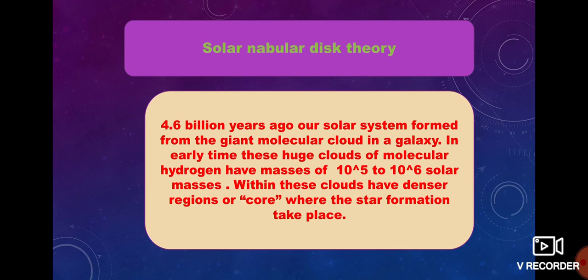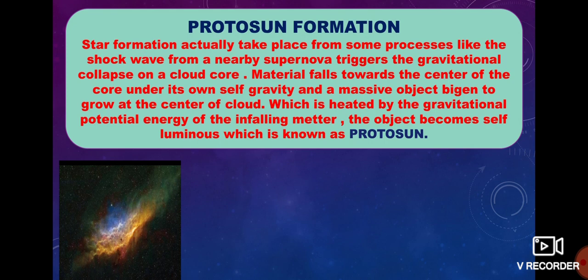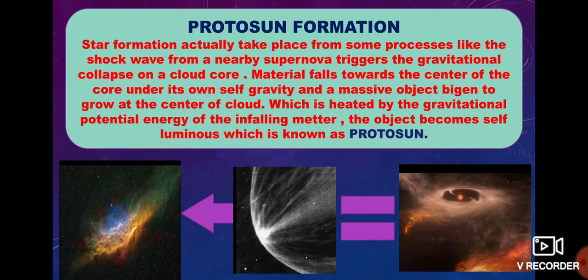4.6 billion years ago, the solar system formed from a giant molecular cloud in the galaxy. In its early state, this huge cloud of molecular hydrogen had a mass of 10^5 to 10^6 solar masses. Within these clouds there were denser regions or cores where star formation took place. A shock wave from a nearby supernova triggered the gravitational collapse of a cloud core. Material fell towards the center of the core under its own self-gravity, and a massive object began to grow at the center. It was heated by the gravitational potential energy of the infalling material, and this object became self-luminous, known as the protosun.